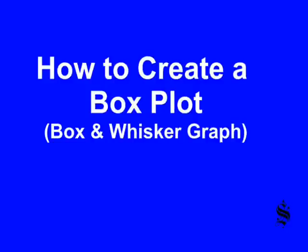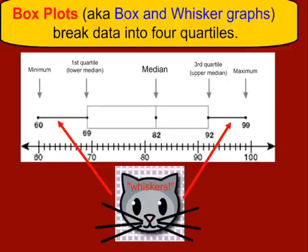How to create a box plot, also known as a box and whisker graph. This is what a box plot looks like, and it looks like these are test scores from a particular class. Essentially what a box plot is, it breaks the data into four quarters, called quartiles.